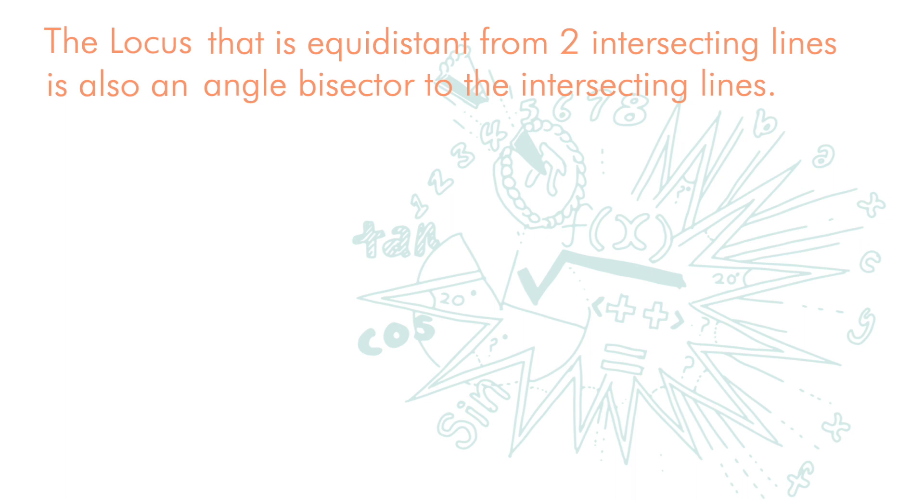If we have two intersecting lines that look like this, then besides this angle bisector, which should extend over to the other side as well, we also have another angle bisector here, which also extends to the other side.